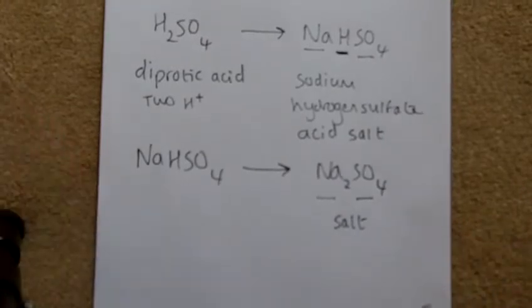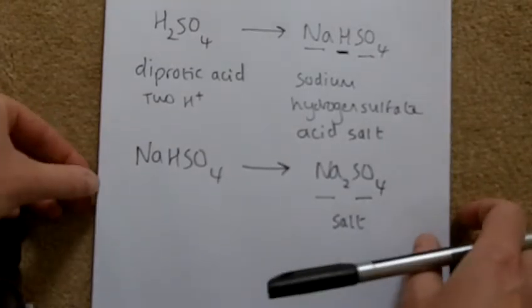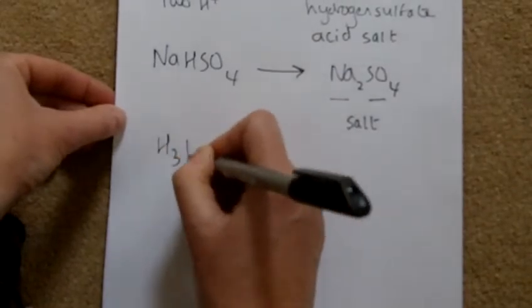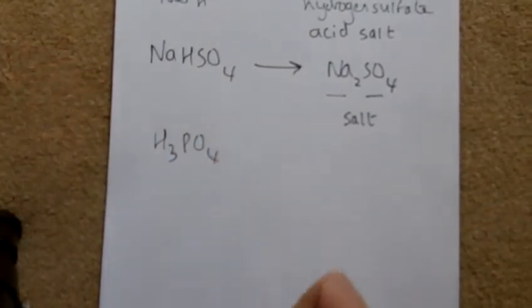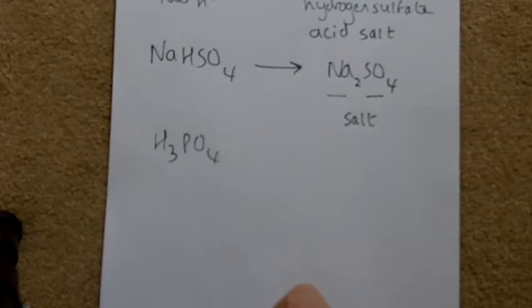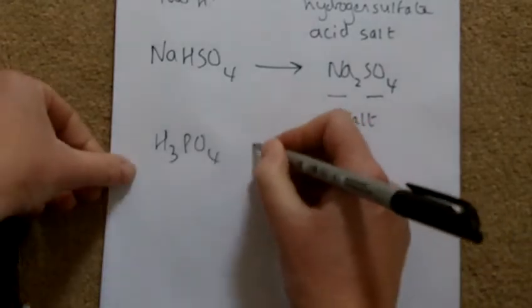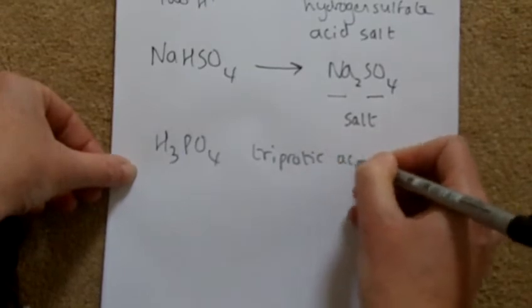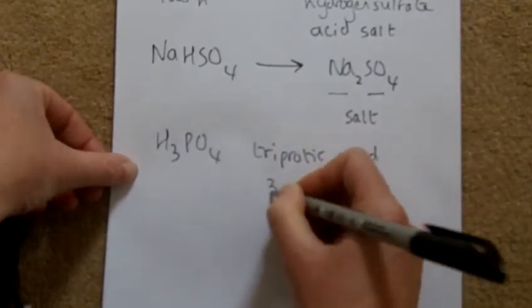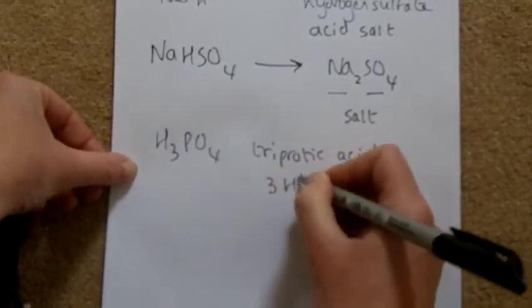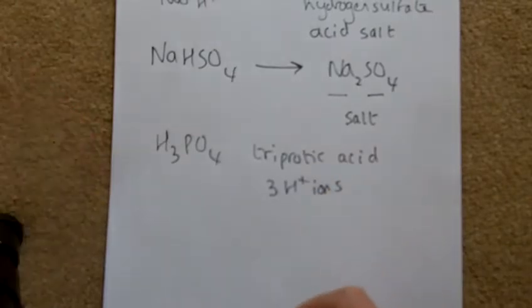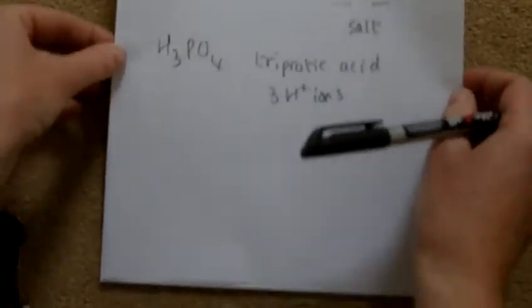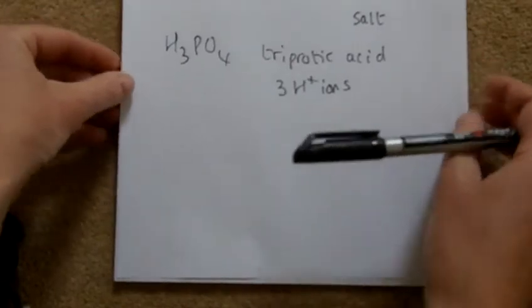What about phosphoric acid? Phosphoric acid is a triprotic acid because it has three H+ ions. So that's a special type — a triprotic acid.